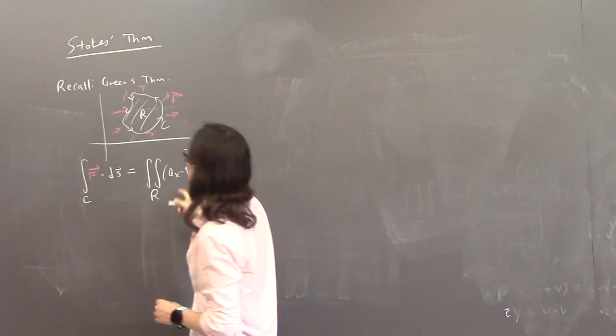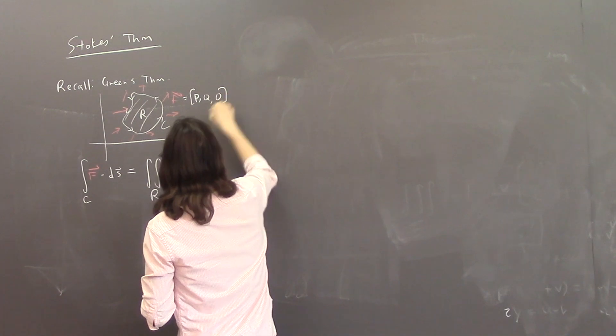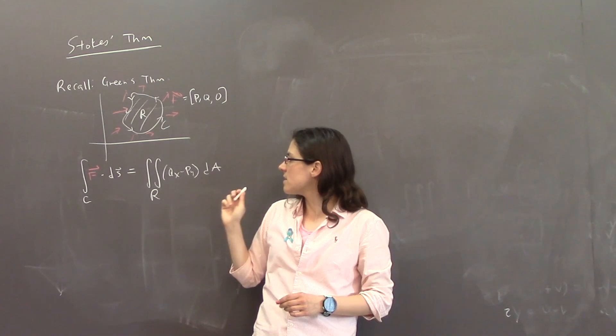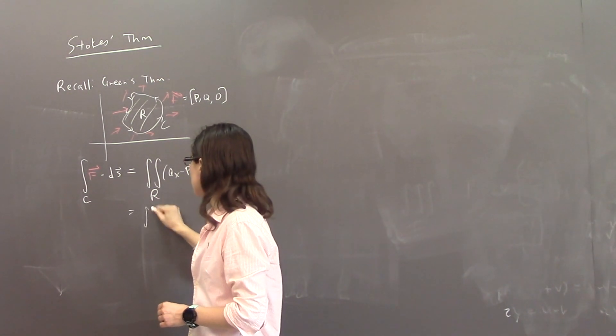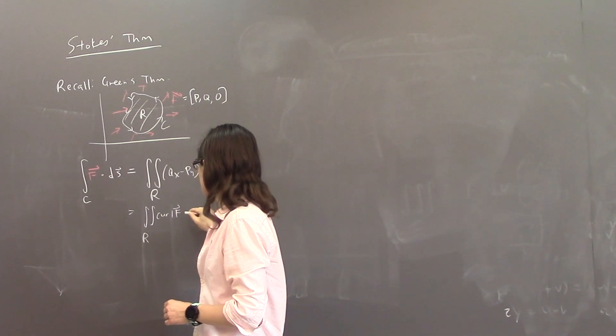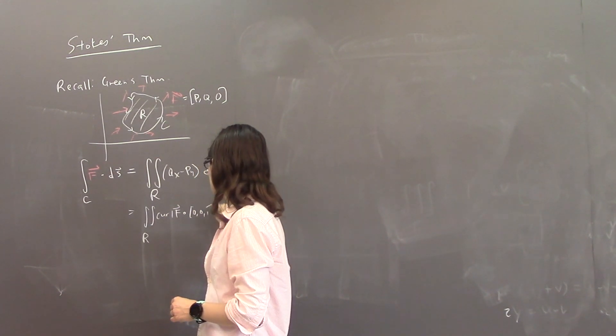Qx minus Py dA over the region enclosed inside. And so this is in the case that F is pq0. And I encourage you to think about this as like a curl. Because what this really is, is the double integral over R of the curl of F dot the vector 0, 0, 1 dA.